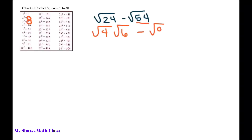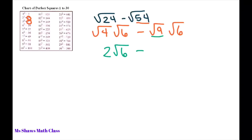...and we need a perfect square to divide 54, which is 9. So we do square root of 9 times the square root of 6. Simplifying: the square root of 4 is 2 — not 3, correction there — so we have 2 times the square root of 6, minus the square root of 9 which is 3 times the square root of 6.